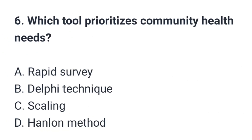Question number six: Which tool prioritizes community health needs? The correct option is D: Hanlon method.